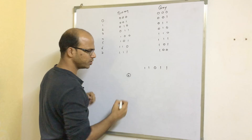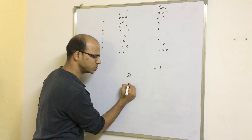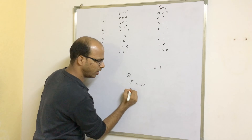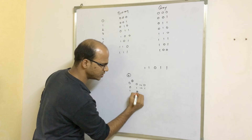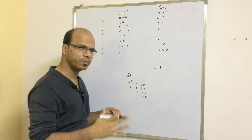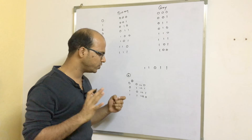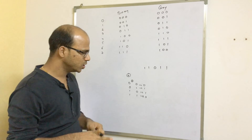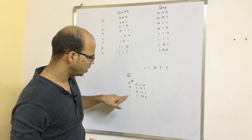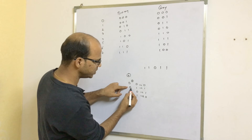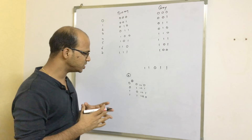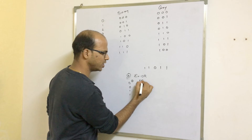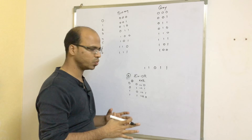XOR is represented with a plus-inside-a-circle operator. If we have two values: 0 XOR 0 = 0; 0 XOR 1 = 1; 1 XOR 0 = 1; and 1 XOR 1 = 0. So: if both values are the same, the answer is 0; if both values are different, the answer is 1. That is how XOR works.